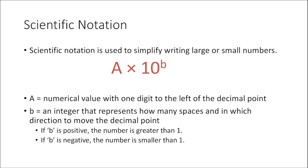The basis of writing a number in scientific notation is that we write a number with one digit to the left of the decimal point — something between 1 and 9.999. The other part is we say that's times 10 raised to a certain power. This exponent b is an integer; it can be positive or negative, and it tells us how many spaces and in which direction to move the decimal point to convert from scientific notation to standard notation.